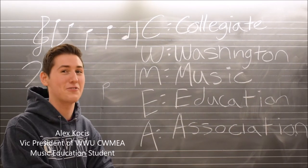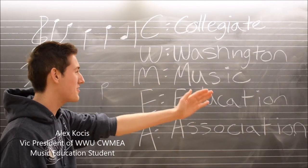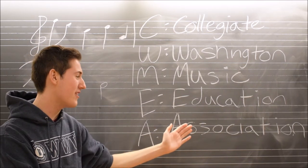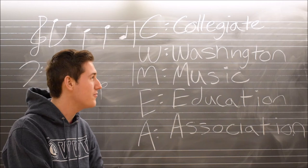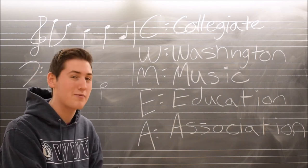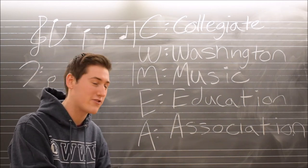CWMEA. Let's break that down folks. C stands for Collegiate, W for Washington, M for Music, E for Education, and A for Association, which is basically a collection of students and advisors that are studying music education or advocating for music education.